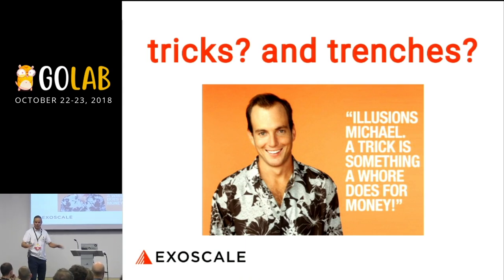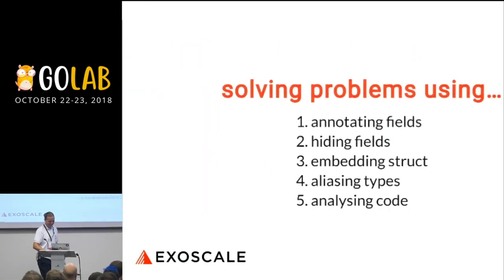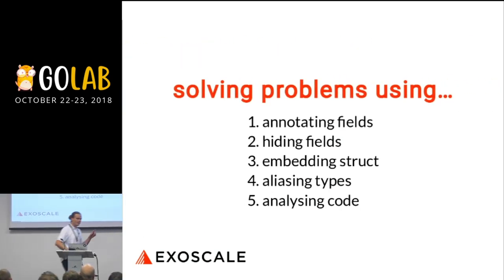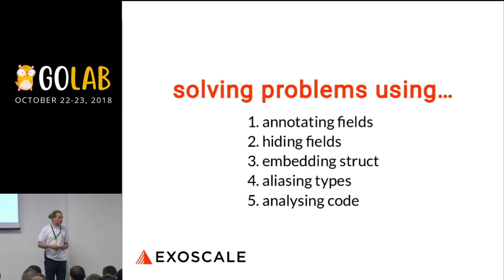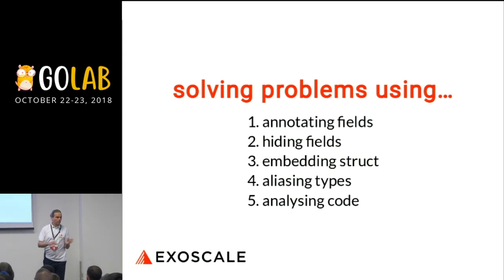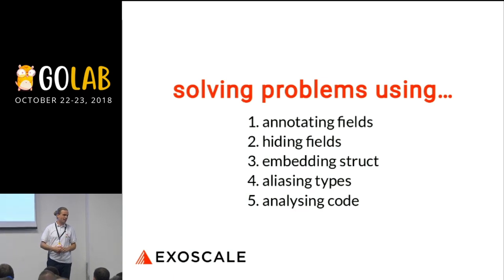So there are going to be no tricks, no worries. What we're going to talk about today: how we solved some of our problems using Go, using annotations in structs, hiding fields to hide some metadata, embedding structs, doing type aliases. And for the last part, some very hard stuff — static analysis on code.